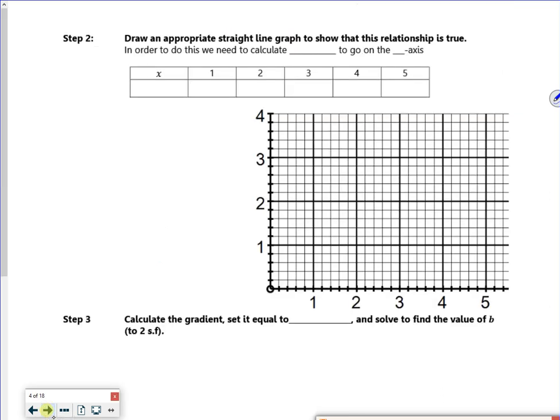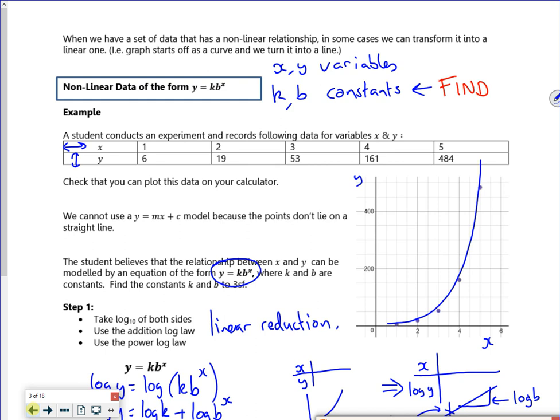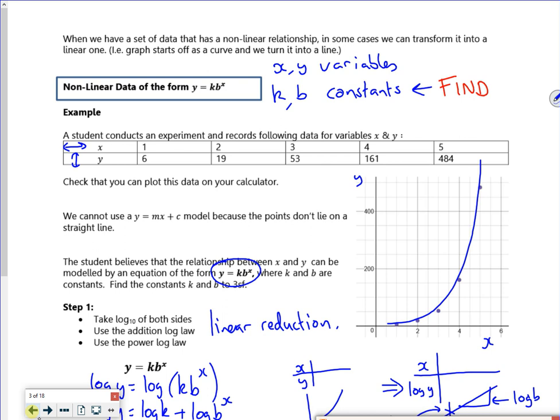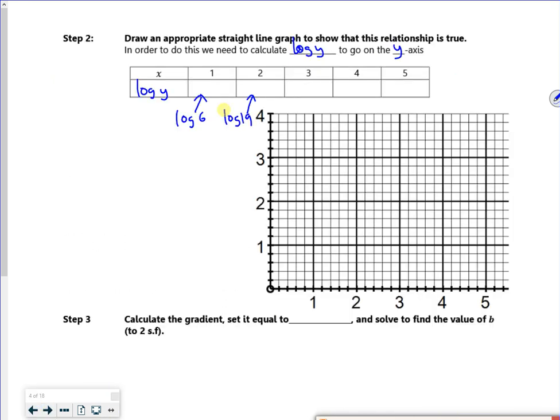So the value of the intercept is log k. The value of the gradient is log b. And I just 10 to the power of those values to get my k and map it out. So let's have a look at the next page. So we want to work out log y to go on the y axis. So log y. So just quick nip back to the previous page. It's 6, 19, 53. Remember that, 6, 19, 53. So that's log of 6. Log of 19. That's going to be log of 53. So it's got nothing to do with the x value. It's log of the y value.